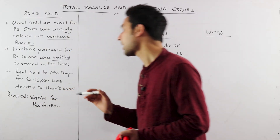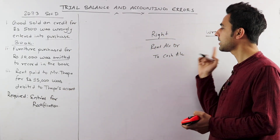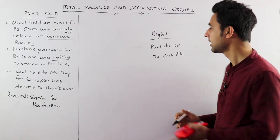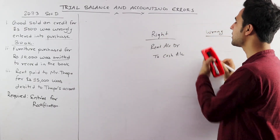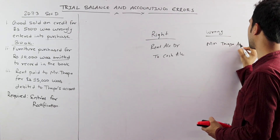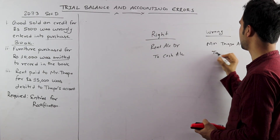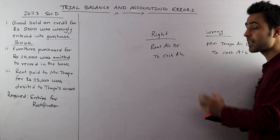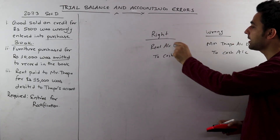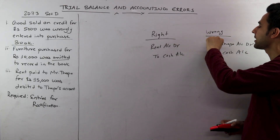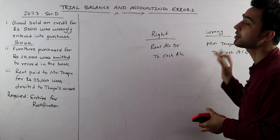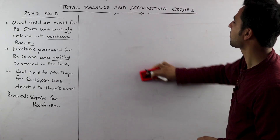What is the mistake? The wrong entry: instead of Rent account debit to Cash, the name of Thapa account was debited. So the wrong entry made was: Mr. Thapa account debit to Cash account.